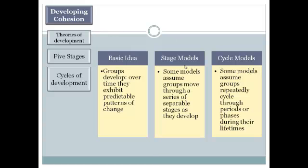Some theories say that development follows in stages — predictable, step-by-step stages. Another model says that groups go through various cycles, going back to different periods and then forward. So it's more of a cyclical dynamic relationship rather than just a linear 1, 2, 3, 4, 5 progression.